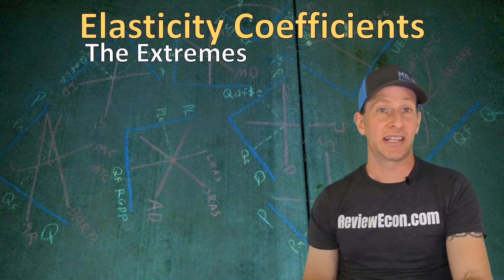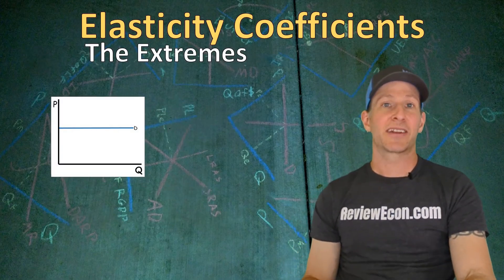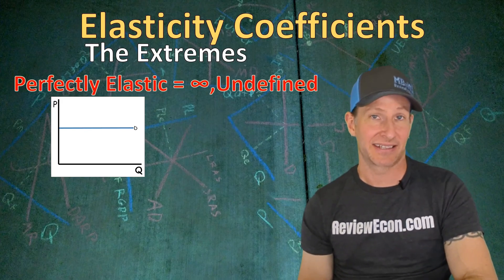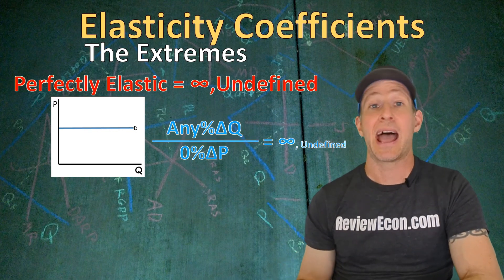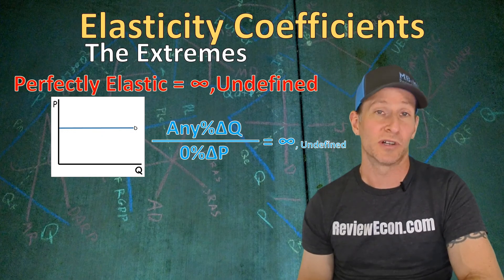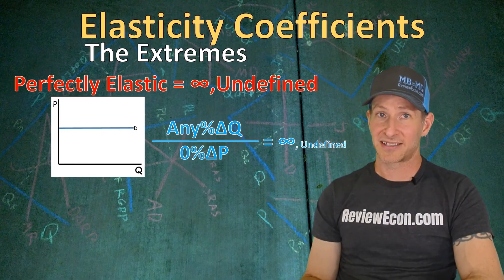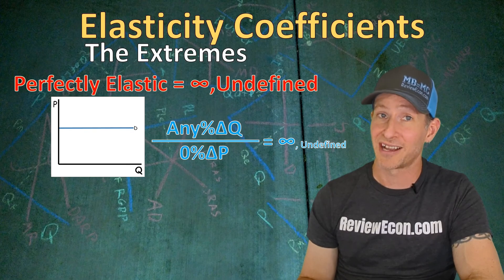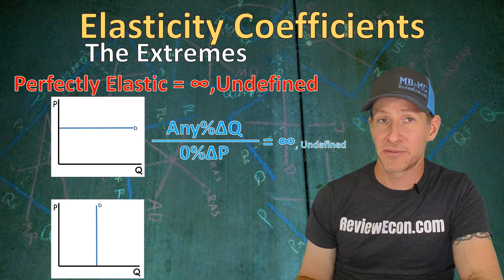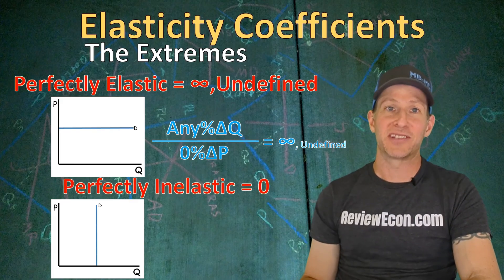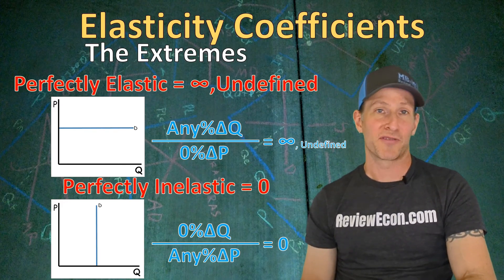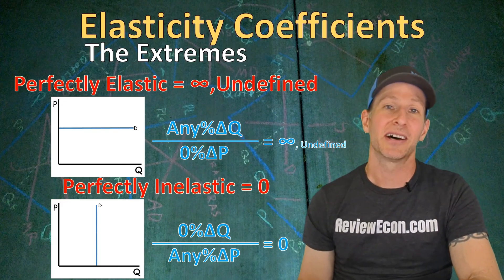Finally, let's talk about the extremes of elasticity. A horizontal demand curve is perfectly elastic — any quantity can be demanded at a single price, but if the price increases by any amount, the quantity demanded falls to zero. This demand curve has a price elasticity coefficient of infinity, or more precisely, undefined. A vertical demand curve is perfectly inelastic — there is one quantity demanded at any price. Any percentage change in price results in a zero percent change in quantity, giving an elasticity coefficient of zero.